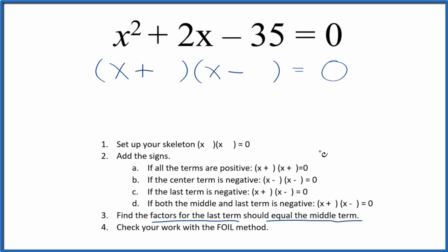So these are the factors for 35. And as I look at the factors, 5 times 7, that would give me 35. And the difference between 5 and 7 is 2.